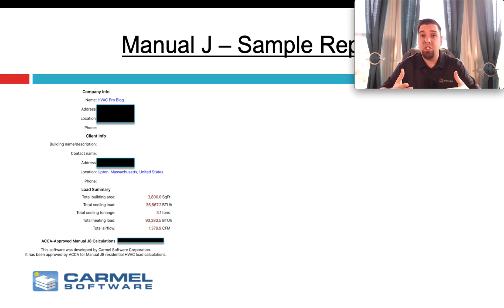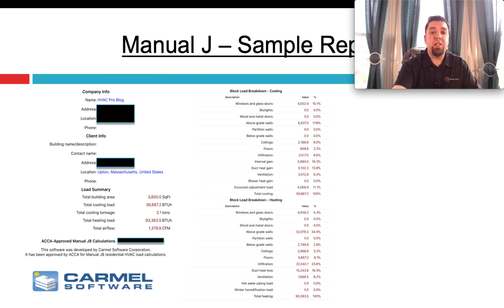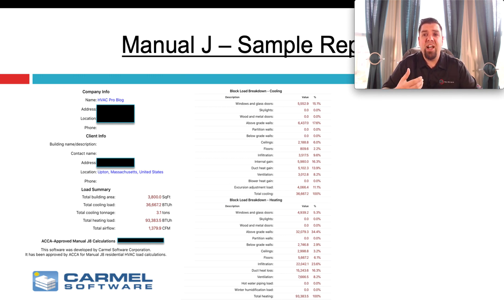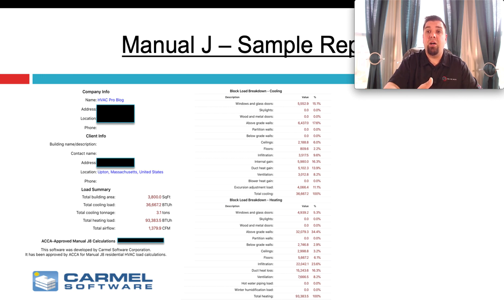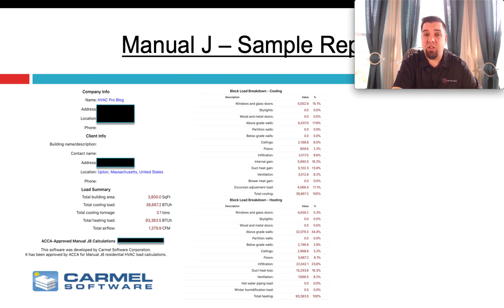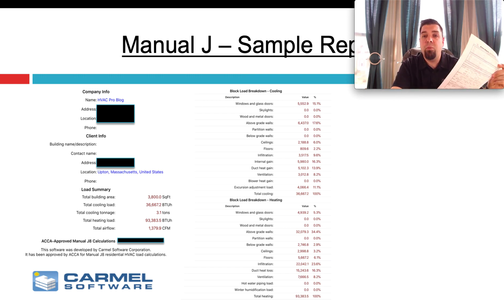Let me show you a couple of reports. This is from Carmel — this is actually my house that we used as the study home. You can see the load calc here, and the information you're looking for is square footage, total cooling load, and total heating load. On the cooling side, you want to break that out into latent and sensible gains — that helps you select the right size piece of equipment, especially on a ducted system. You also want to look at the percentages to make sure you didn't miss anything. For example, if I know I have skylights but the report shows zero, I missed the skylight — a very quick and easy thing to check.